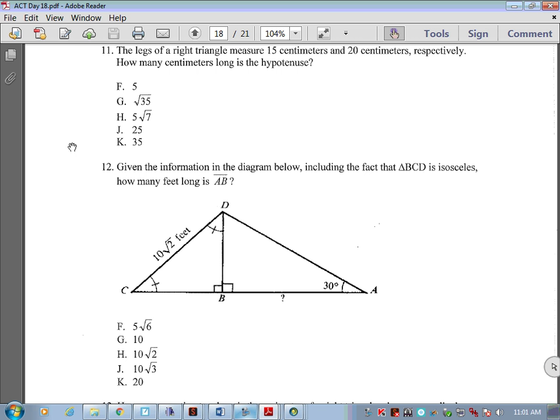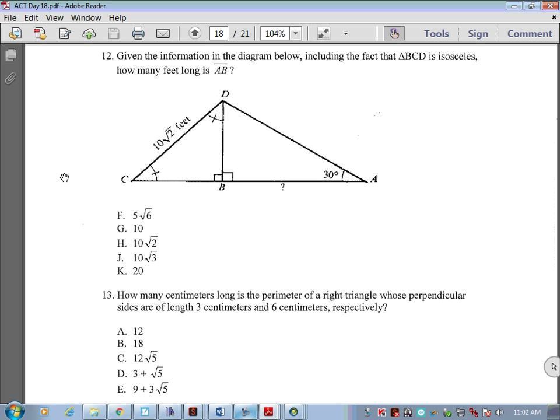What about 11 through 13? 11, 12, or 13? 12? Do we have another one? No, 12? Given the information in the diagram below, including the fact that triangle BCD is isosceles. Well that's important, because that's going to automatically show me that this is a 45, 45, 90. So then that's going to tell me, and I guess I need to look at what we're actually trying to solve for. It says, how many feet long is AB? Well, just automatically, I do know that this is 10, and this is 10, because of my ratios.